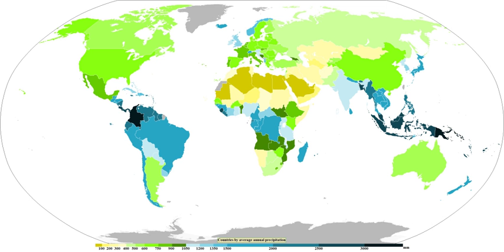Any of the above rain gauges can be made at home with enough know-how. When a precipitation measurement is made, various networks exist across the United States and elsewhere where rainfall measurements can be submitted through the Internet, such as CoCoRaHS or GLOBE. If a network is not available in the area where one lives, the nearest local weather office will likely be interested in the measurement.